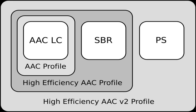MPEG-4 Part 3, or MPEG-4 Audio, is the third part of the ISO/IEC MPEG-4 international standard developed by the Moving Picture Experts Group. It specifies audio coding methods. The first version of ISO/IEC 14496-3 was published in 1999. MPEG-4 Part 3 consists of a variety of audio coding technologies,